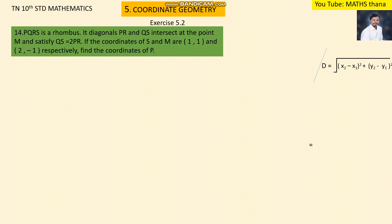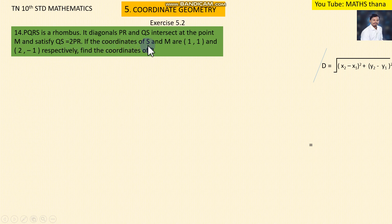PQRS is a rhombus. Its diagonals PR and QS intersect at point M and satisfy QS equal to 2PR. If the coordinates of S and M are (1,1) and (2,1) respectively, find the coordinates of P.